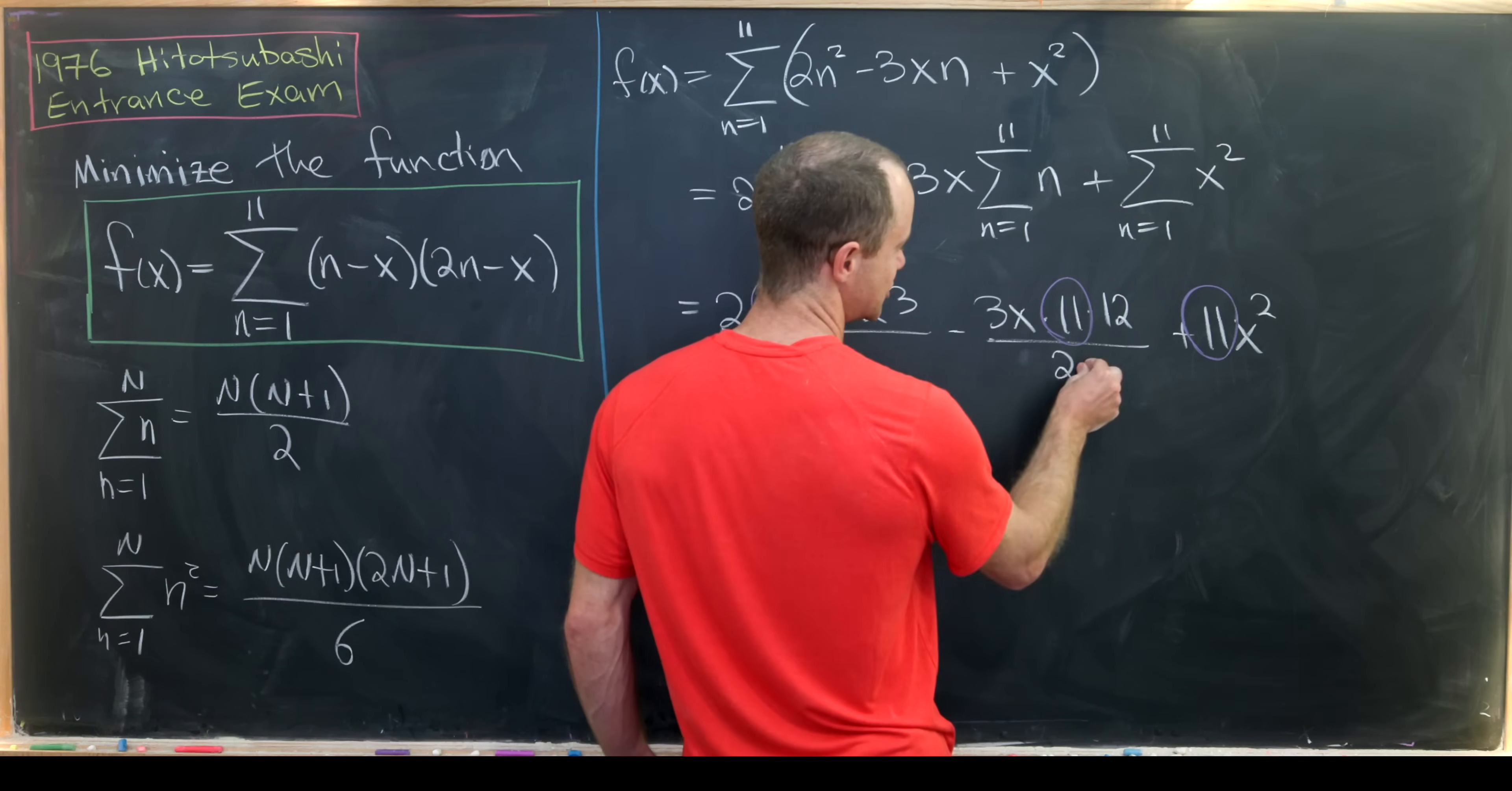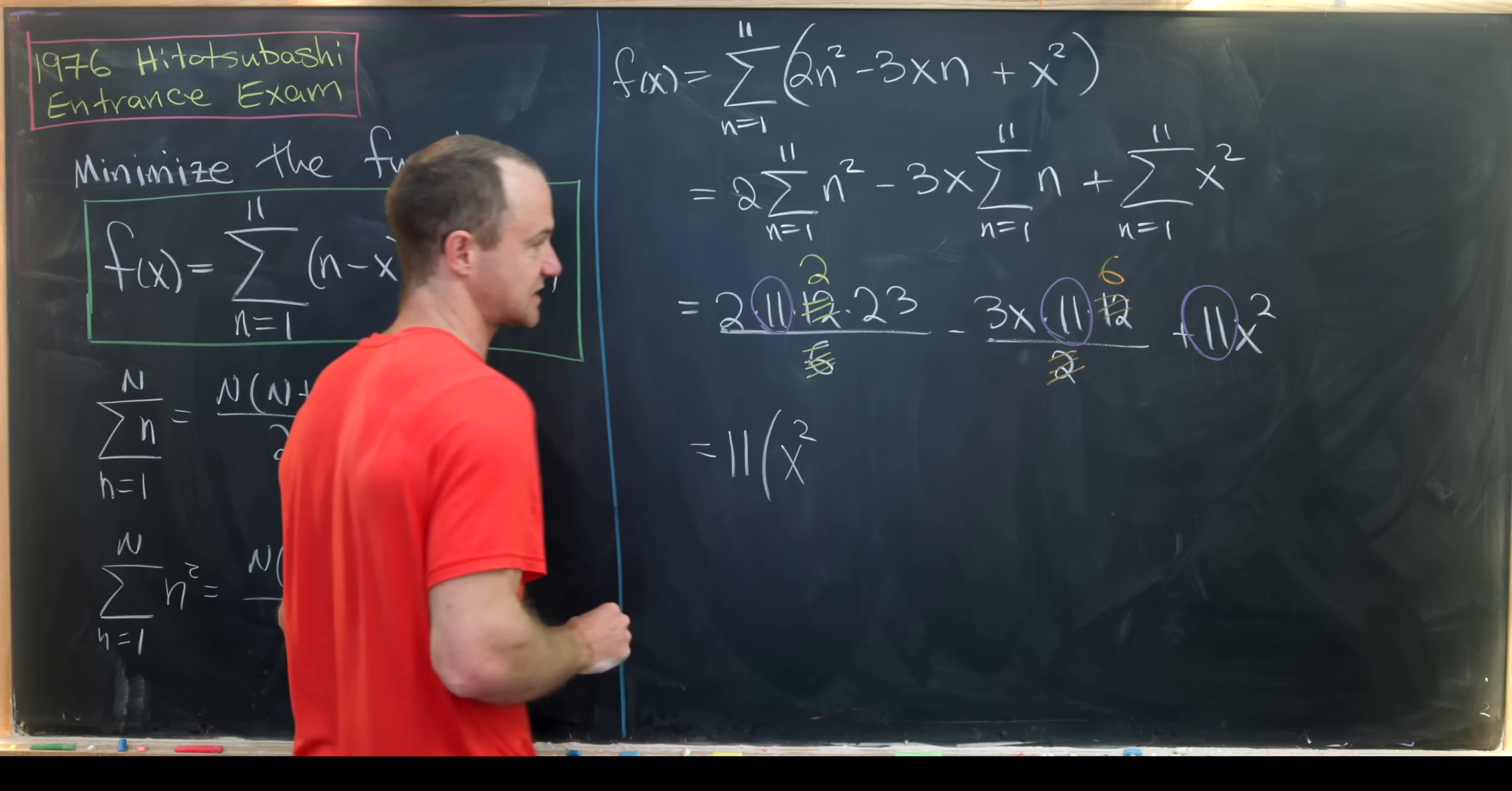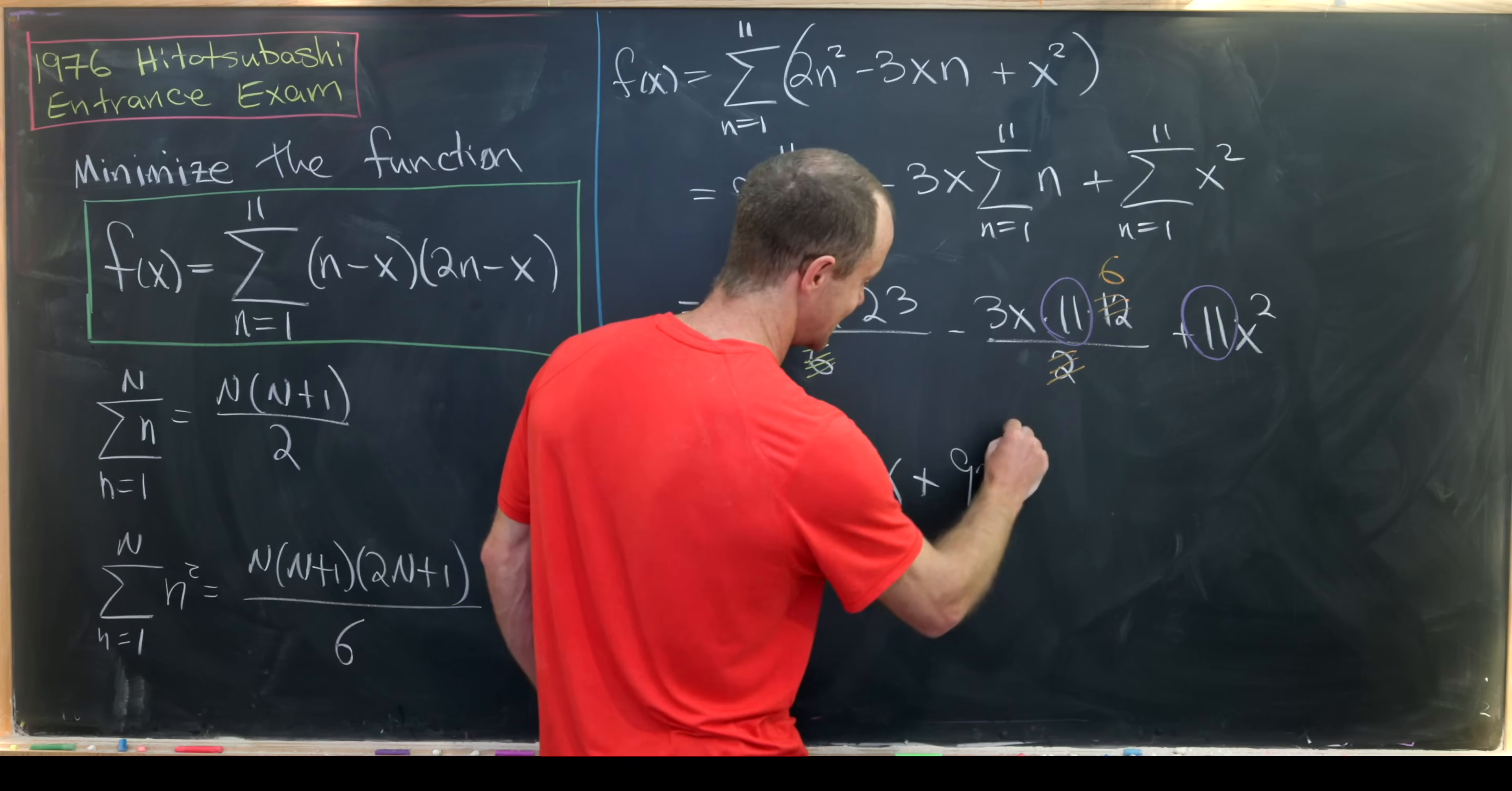And then this 2 will cancel this 12 down to a 6. So after factoring the 11 out that'll leave us with x² - 18x and then plus 2 times 2 times 23 which is 92.